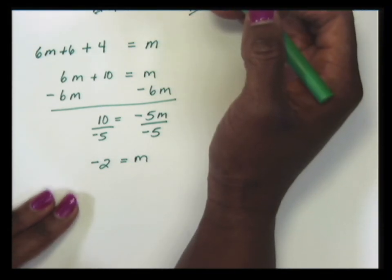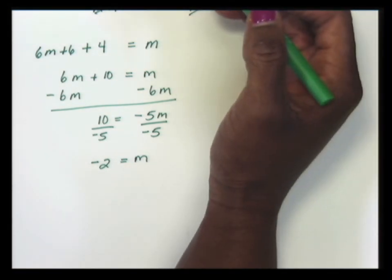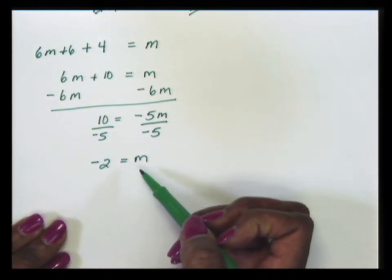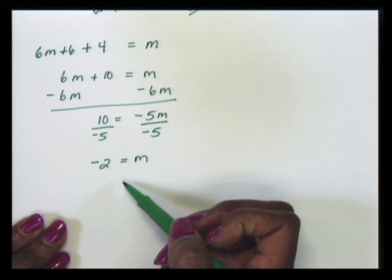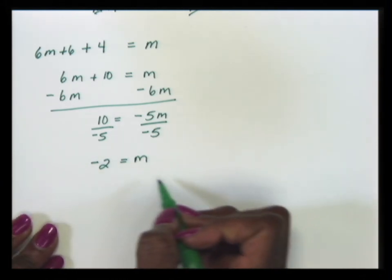Checking to make sure that our solution does not cause our denominator to be 0, we can say that our solution is negative 2. m is equal to negative 2.